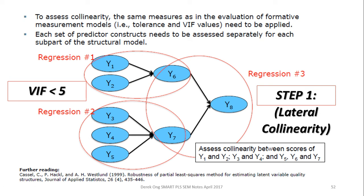This is to ensure that there is no multicollinearity between the latent variables. We have already checked discriminant validity between the variables, but you can never be too sure. In this example, you can see that there are three regressions which you need to check for their lateral collinearity.